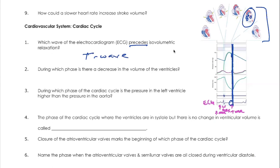Another thing to note: this also lines up with end-systolic volume, which is the volume remaining in the ventricle after the semilunar valves close and before the AV valves open again. You can also say that end-systolic volume is occurring during the same time as isovolumetric relaxation.